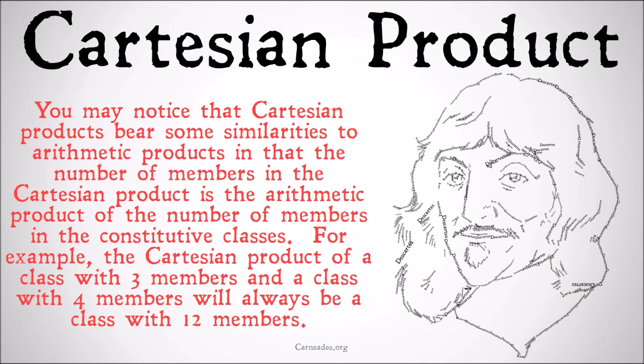You may notice that Cartesian products bear some but not all similarities to arithmetic products in that the number of members in the Cartesian product is the arithmetic product of the number of members in the constitutive classes. So we saw A times F. A didn't have any members, and so in the same way, it doesn't matter how many members F has, A times F is going to equal the null set. That's the same as it doesn't matter what you multiply zero by, you're always going to get zero. For example, the Cartesian product of a class with three members and a class with four members will always be a class with twelve members, so long as the three members are distinct from each other and the four members are distinct from each other.